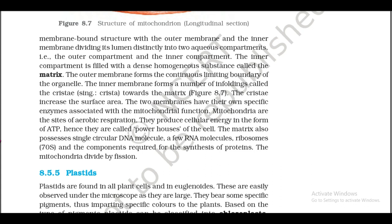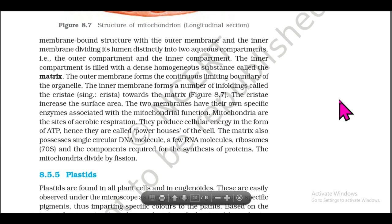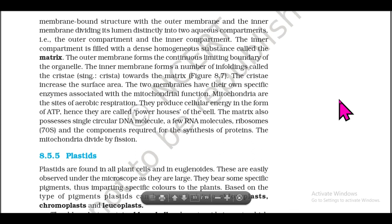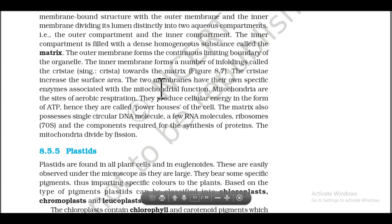Each mitochondrion is a double membrane-bound structure with an outer membrane and an inner membrane dividing its lumen into two aqueous compartments: the outer compartment and the inner compartment. The inner compartment is filled with a dense homogeneous substance called the matrix. The inner membrane forms a number of infoldings called cristae (singular: crista) towards the matrix, increasing the surface area. The two membranes have specific enzymes associated with mitochondrial function. Mitochondria are the sites of aerobic respiration, producing cellular energy in the form of ATP — hence called the powerhouses of the cell.